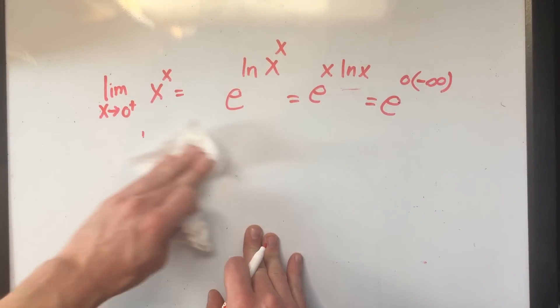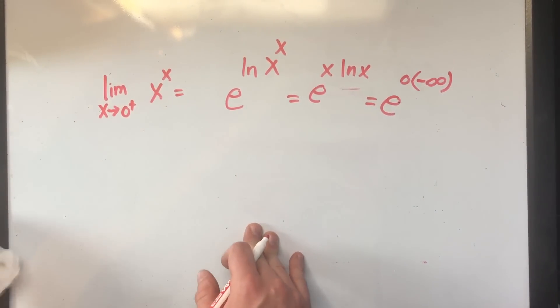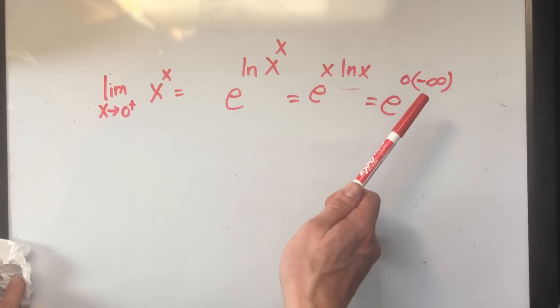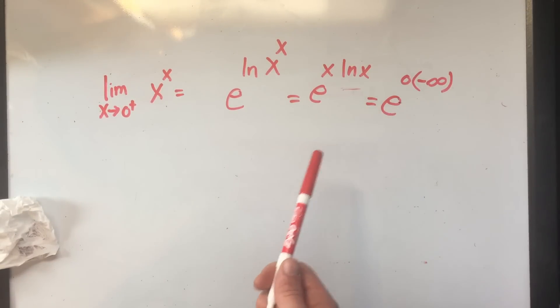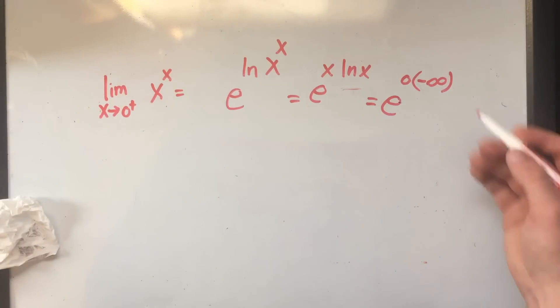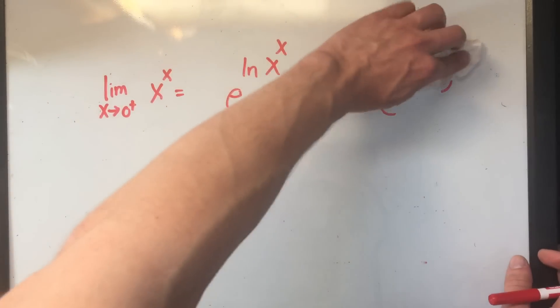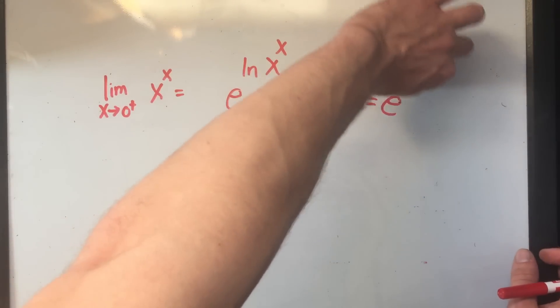So again, you kind of have two things you need to think about. Well, zero times anything is zero, right? Or maybe you're thinking infinity times anything is infinity. Which is it? We don't know. Zero times infinity is another indeterminate form. So I got to do something different.